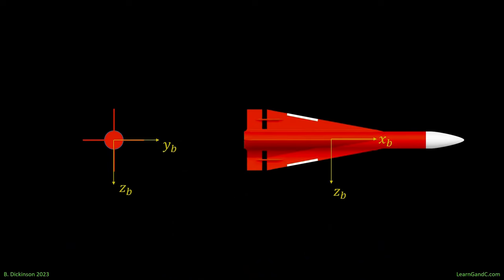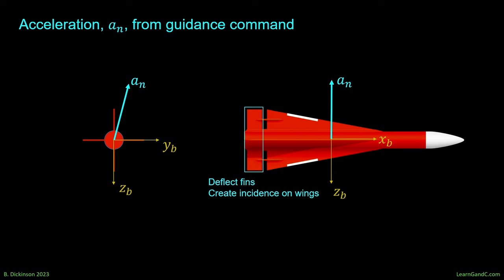To hit its target, a missile has to maneuver. This is usually done by meeting acceleration commands from a guidance homing loop. And for this, the missile will deflect its fins to create incidents on the wings, which produces acceleration in both the lateral and longitudinal planes of motion.